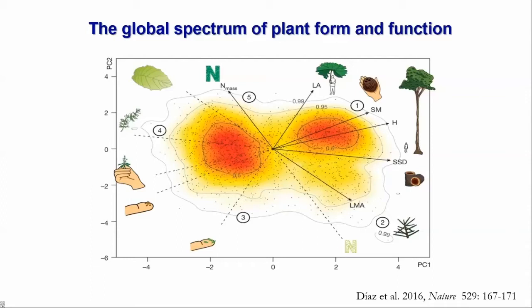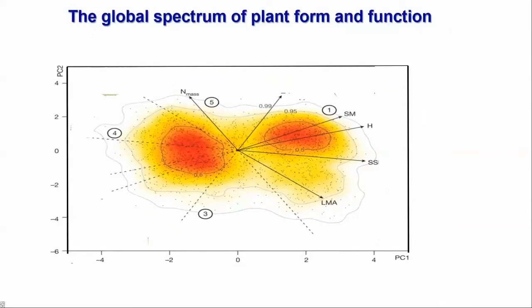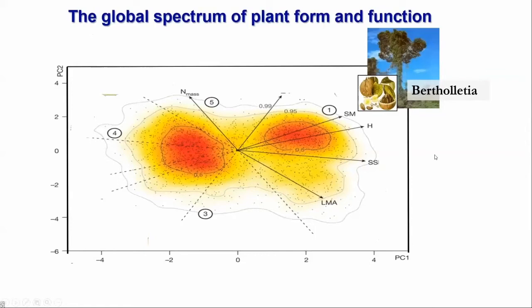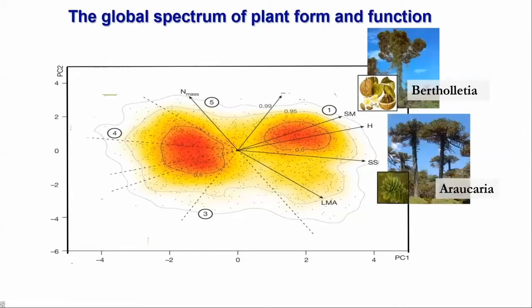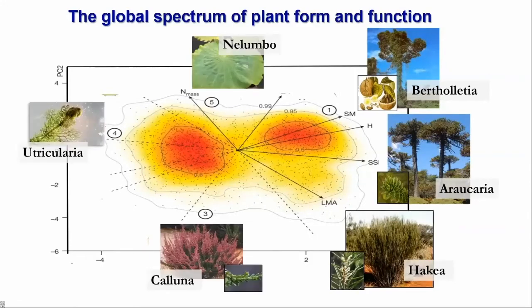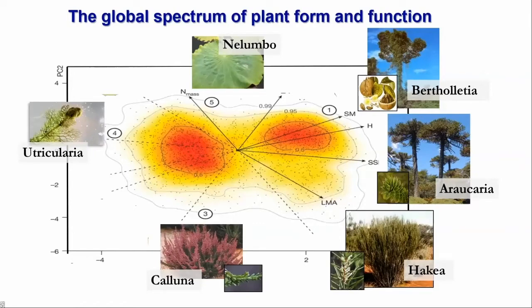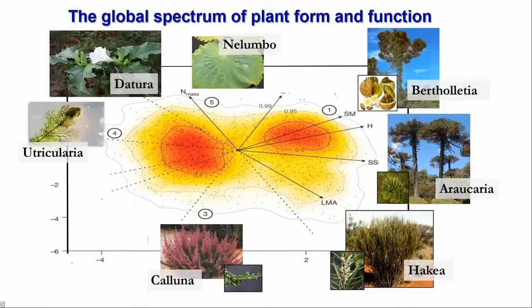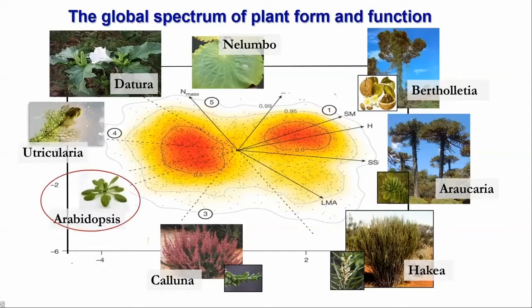This is the first global picture of essential functional diversity of vascular plants. Let me show some illustrations of the kinds of plants located at the fringes of this plane. Here we have the Brazil nut, pines, junipers, monkey puzzles, hakeas, heathers, large floating and tiny submerged aquatic plants, the tender but toxic devil snares, and hemp. And because many of you work in genetics and molecular biology, I thought you would be interested in knowing where Arabidopsis is — it's here, in a remote, sparsely populated corner of the functional galaxy.